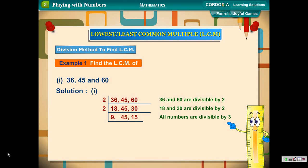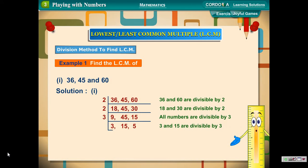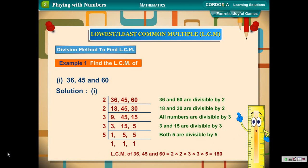All numbers are divisible by 3. 3 and 15 are divisible by 3. Both 5 are divisible by 5. LCM of 36, 45 and 60 is equal to 2 into 2 into 3 into 3 into 5 which is equal to 180.